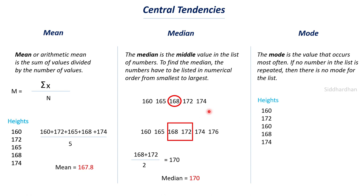Let's look at an example. We have heights of five people, and 160 appears two times in the data set, while 172, 168, and 174 each appear only once. The value that is repeated most is 160, so in this case the mode is 160. Mode also has important application in central tendencies, which will be explained in the next slides.